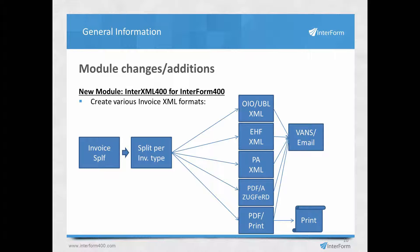Requests to generate special invoice XML files often come from your customers. You might need to create different XML types depending on the country — OIO or UBL XML for Scandinavian countries, EHF for Norway, PA in Italy, Zugferd in Germany, and so on. Some customers may want only a printed output or PDF. You can take your original invoice profile, split it by invoice type, and distribute the output via VANs, email, or print.